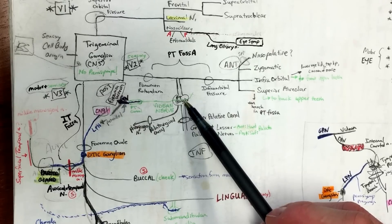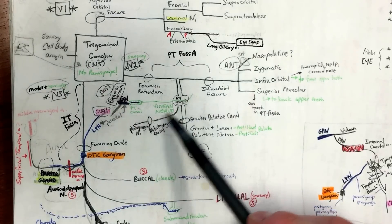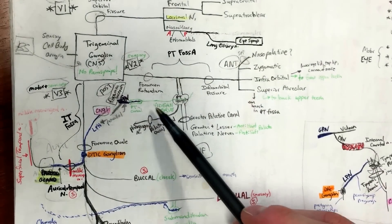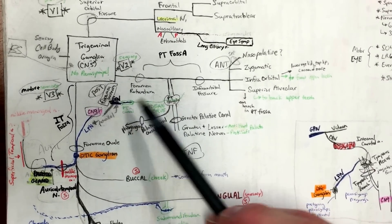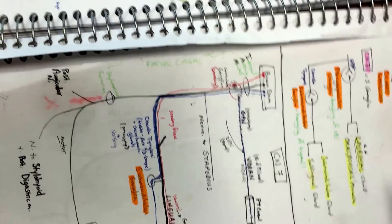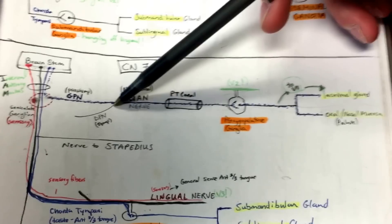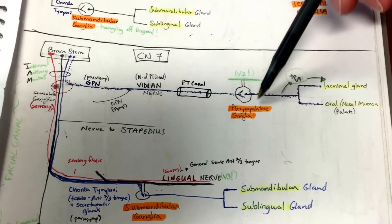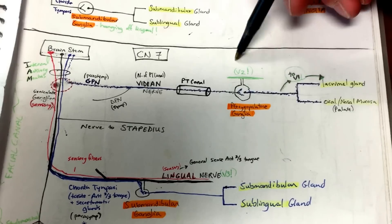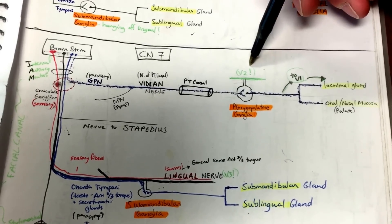You're gonna have your deep petrosal and your greater petrosal both coming in, and that's called the vidian nerve. So your greater petrosal nerve off of which cranial nerve? Seven, right. As a reminder from before, we had cranial nerve seven, here's your greater petrosal joining with deep petrosal sympathetics, becoming the vidian nerve, going through the PT canal that we're seeing now and hitting the PT ganglion, which is dangling off of V2. So this is where we are right now.